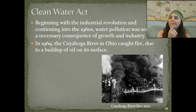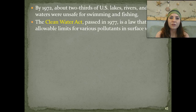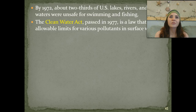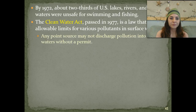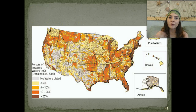Officials thought to themselves, maybe we should do something about this—and they did. Articles in Time Magazine and National Geographic spurred this movement and gave birth to the first water pollution laws. By 1972, about two-thirds of the United States lakes, rivers, and coastal waters were actually unsafe for swimming and fishing. The Clean Water Act was passed in 1977, setting allowable limits for various pollutants in surface waters. Any point source may not discharge pollution onto surface waters without a permit, and states are required to develop lists of impaired waters that are too polluted to meet water quality standards—so people know where they need to stay away from, where they can't swim, and where they also can't eat fish.